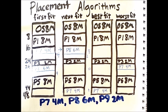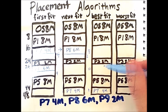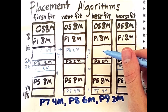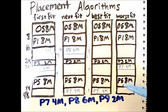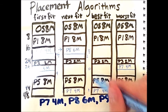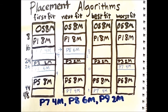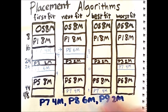Best fit considers the options for process 8, seeing that there are slots of size 10 and 8 left. 8 minus 6 leaves 2 unoccupied megabytes, whereas 10 minus 6 leaves 4 unoccupied megabytes. The better fit is to place process 8 here.